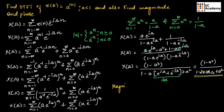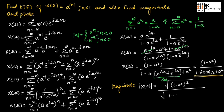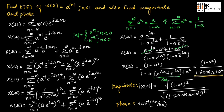Now let us find the magnitude. |x(ω)| equals the square root of (1 − a²)² divided by the square root of (1 − 2a·cos(ω) + a²)². This is the magnitude of the given sequence. To find the phase, since both numerator and denominator have no imaginary terms, the imaginary part is 0. Therefore, phase = tan⁻¹(0) = 0. The phase of the given sequence is equal to 0.